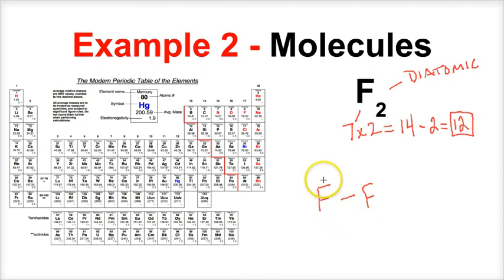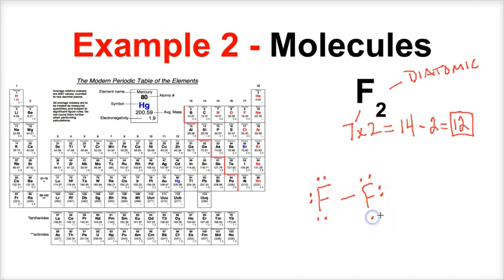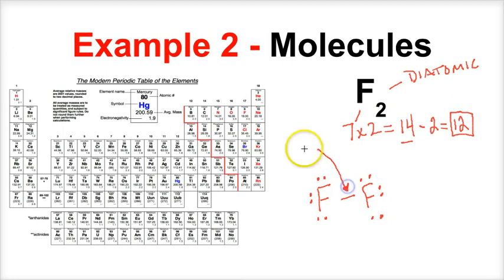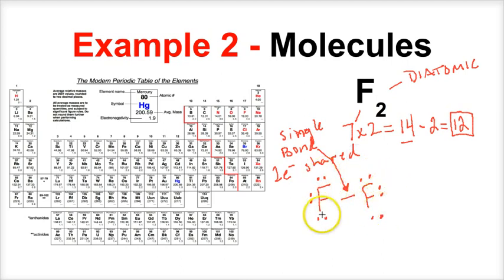All atoms other than hydrogen want eight valence electrons; hydrogen only wants two. We use the remaining 12 electrons — placing six around each fluorine. Each fluorine then has 8 electrons counting the bond, satisfying the octet rule. We've used all 14 valence electrons, and the octet rule for both atoms is satisfied — that's the correct Lewis structure for F2.